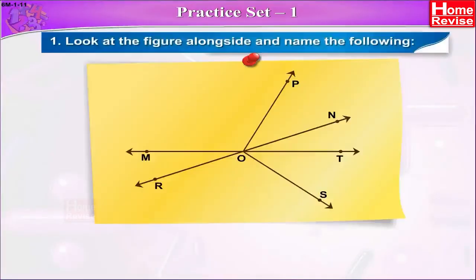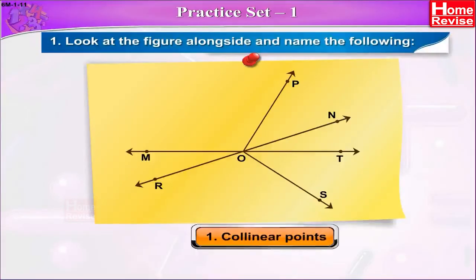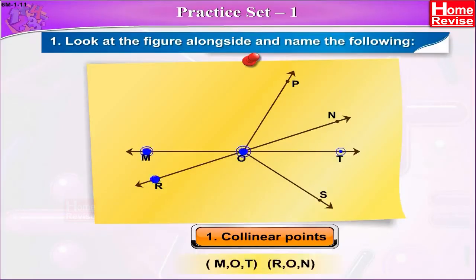Practice set 1. Look at the figure alongside and name the following. In the given figure, collinear points are M, O, T and R, O, N.